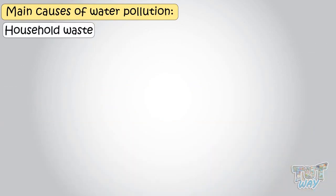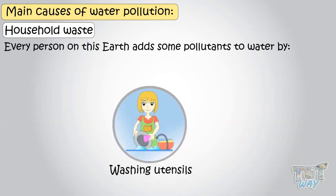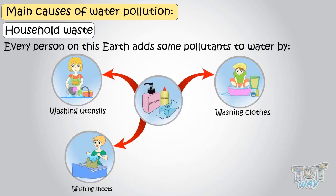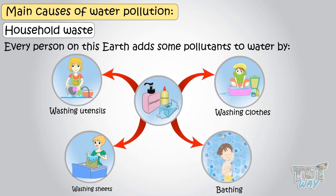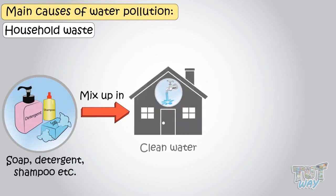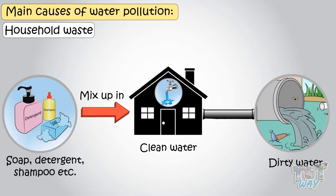Next is household waste. Every person on Earth adds some pollutants to water. Utensils, clothes, and sheets are washed in every house using detergent and soap. People bathe using soaps and shampoos. All these soaps, detergents, and shampoos mix into clean water and change it into dirty water, which ultimately reaches water bodies through long pipes and contaminates them.